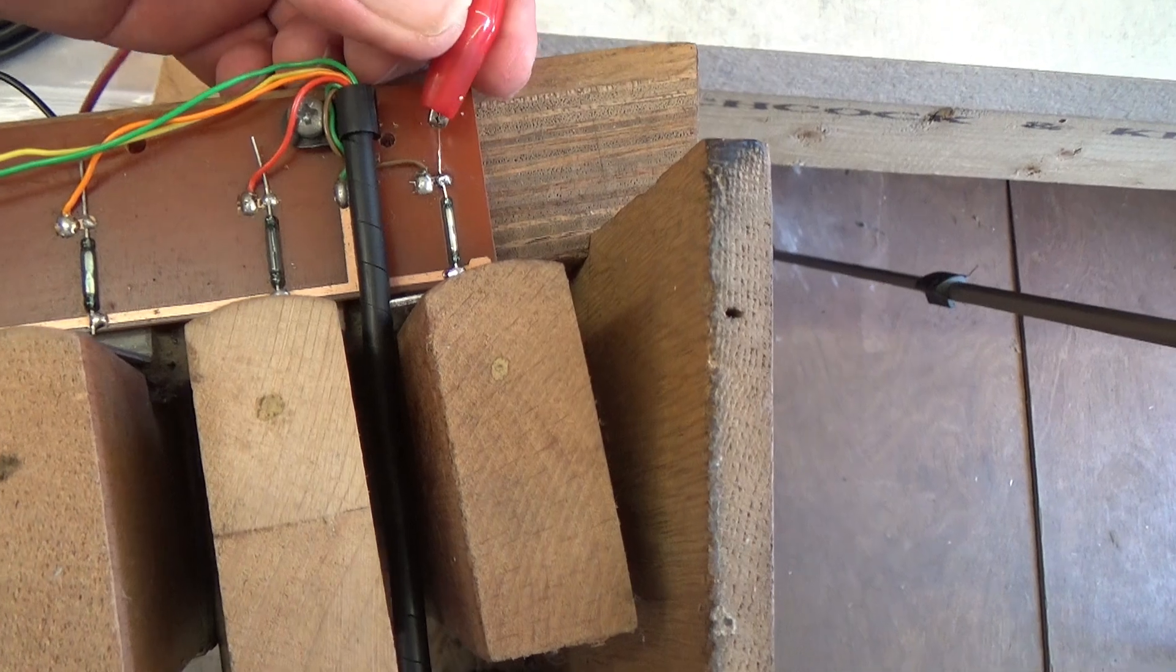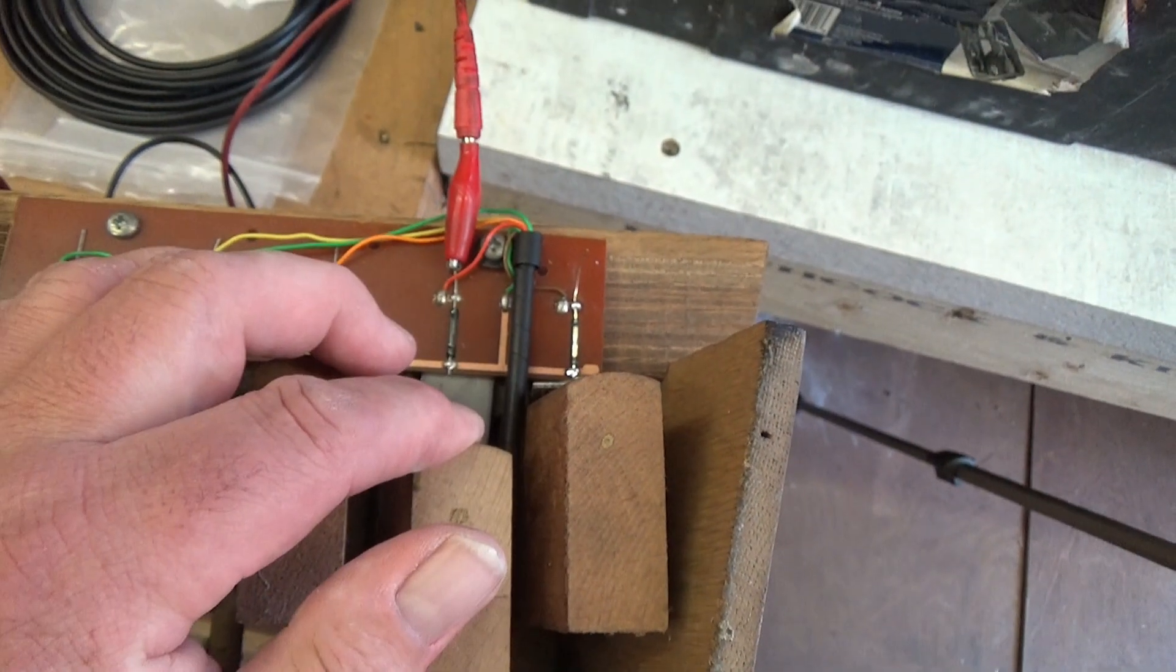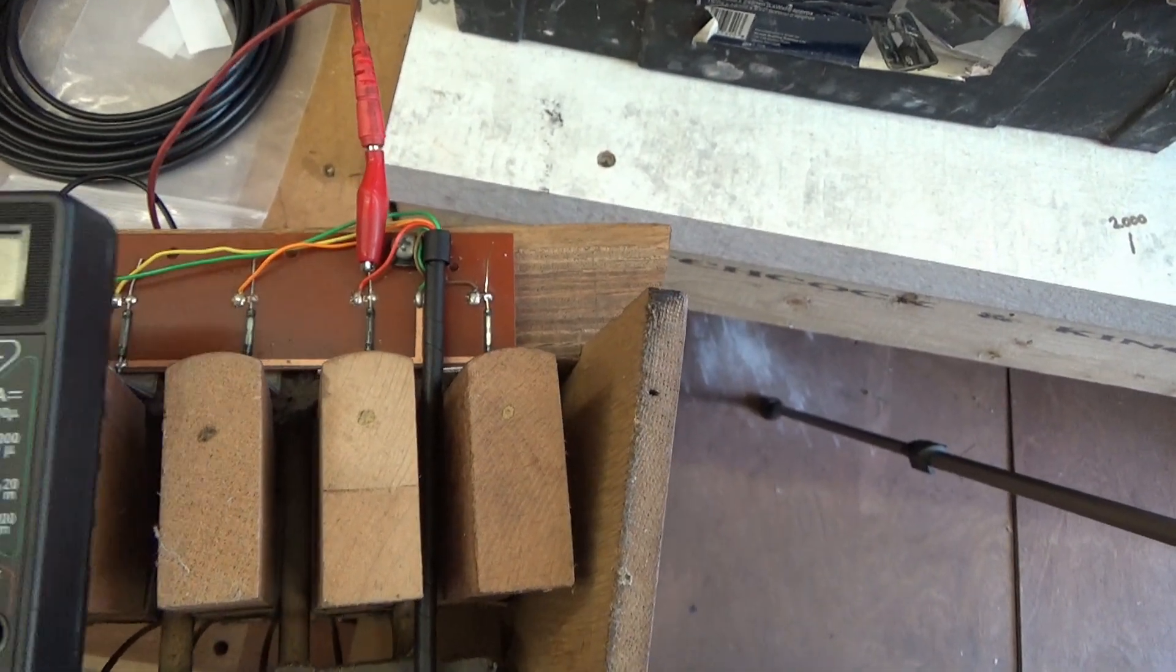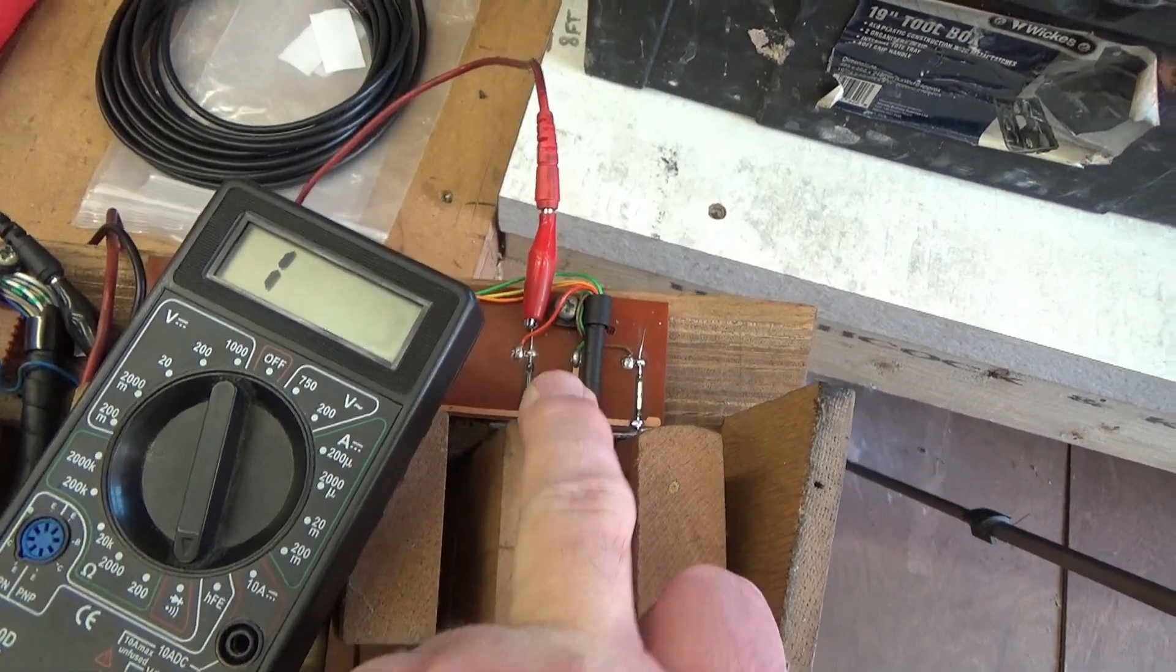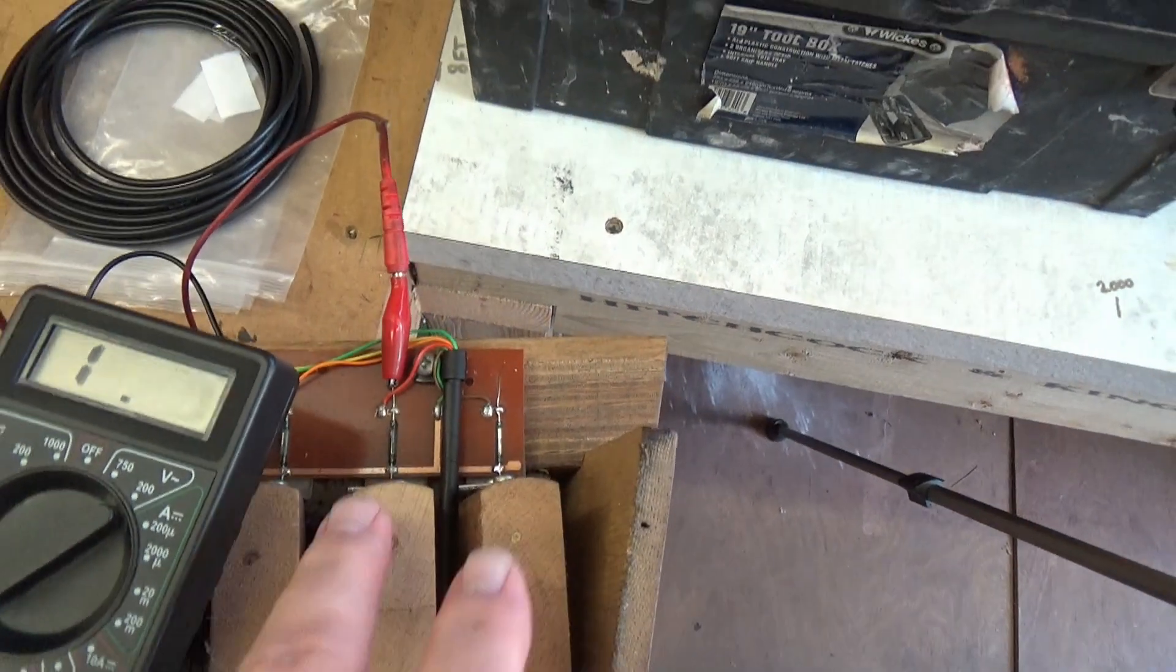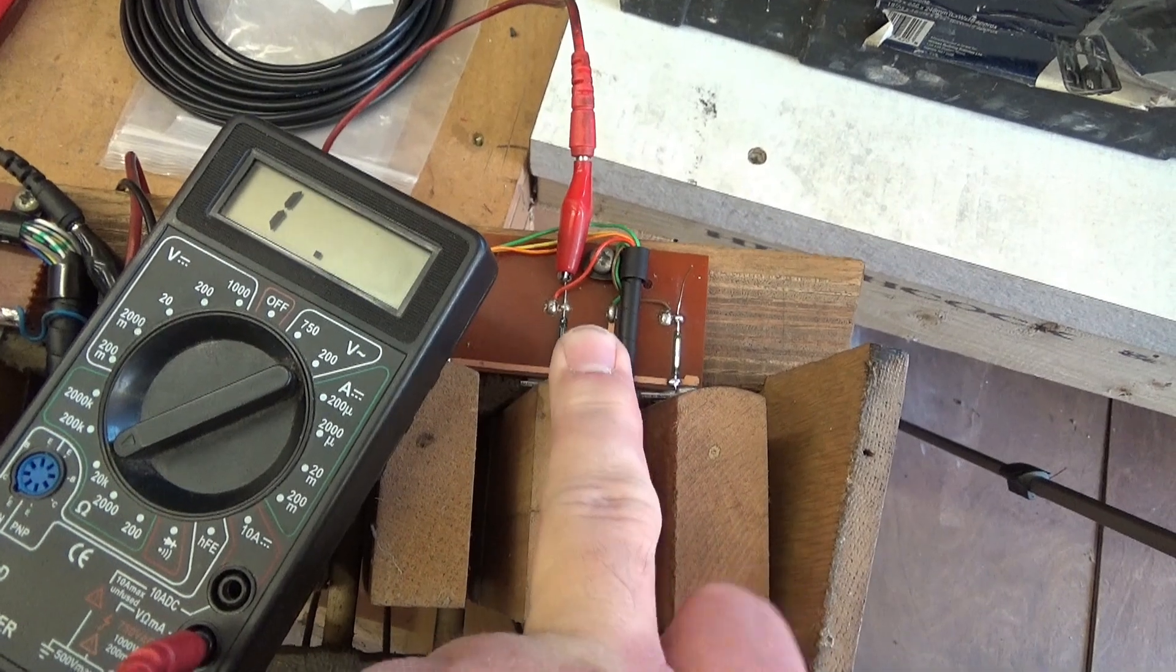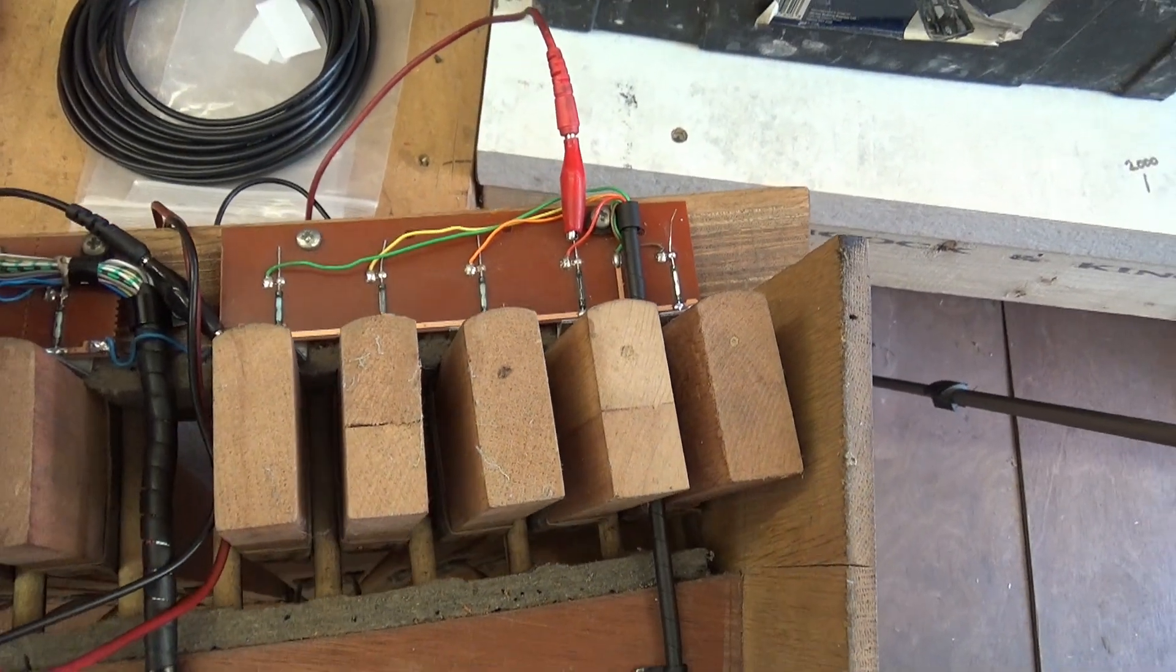However, if we move the meter along to the next reed switch and we do the same again, nothing happens at all. There's no change on the meter, it's not even showing a high resistance, nothing. If you go up to the higher ohms range and then repeat the test, you still get nothing. So obviously that reed switch isn't working.